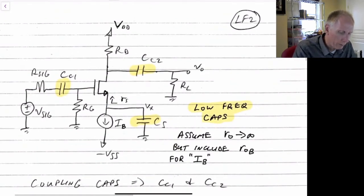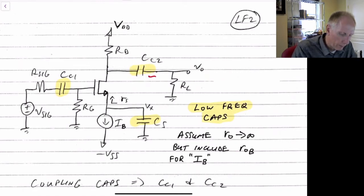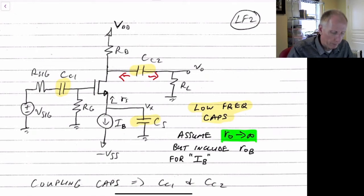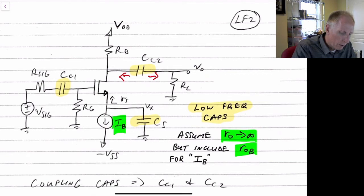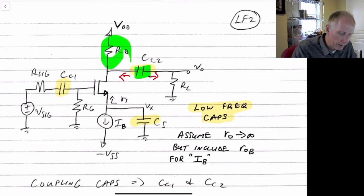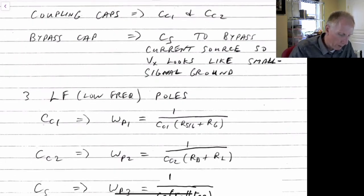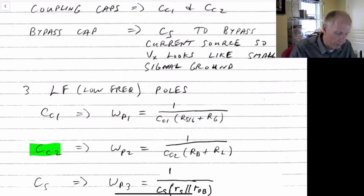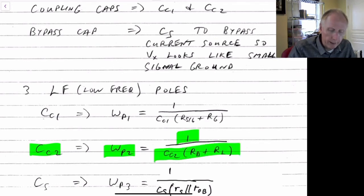We do something similar for C sub C2 and look at the impedance across it. In this example we assume that R0 of the transistor goes to infinity, but we include R sub B due to the current source. For C sub C2, the impedance seen across it is a series connection of R sub D and R sub L. So omega P2 = 1 / (C sub C2 × (Rd + RL)).